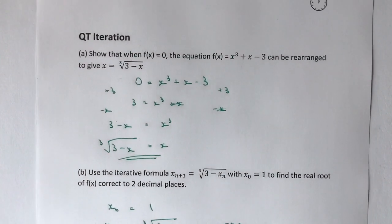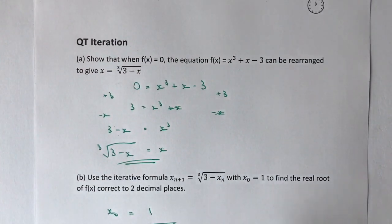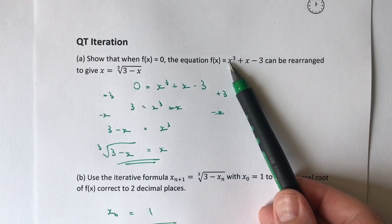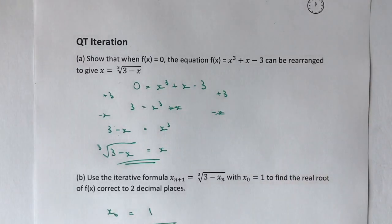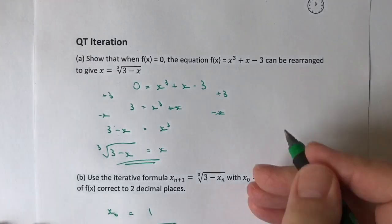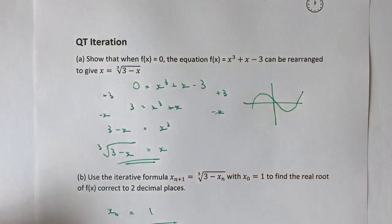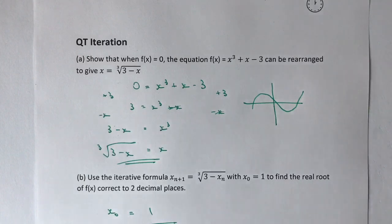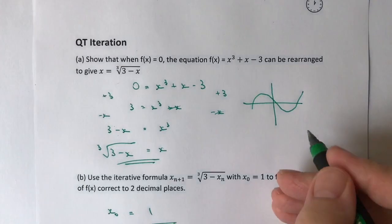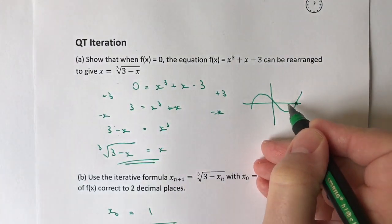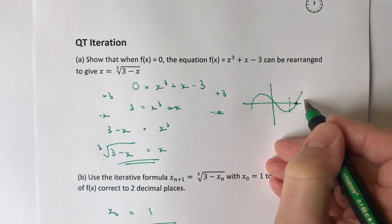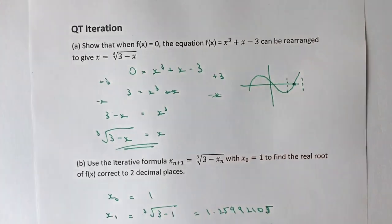An x cubed graph is going to look something like that. What we're doing here is we're saying, in very incremental steps, we're getting closer and closer to this solution. It might be that we start here, as we did with 1.2599.